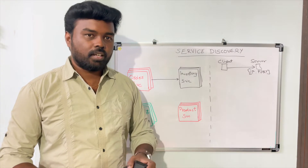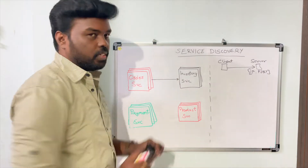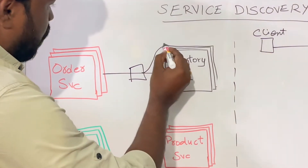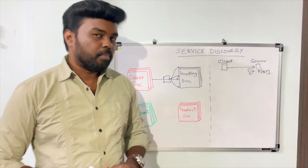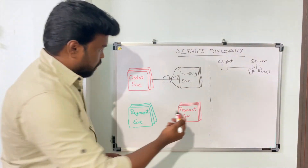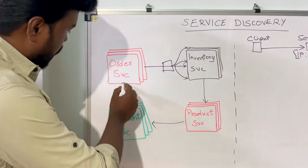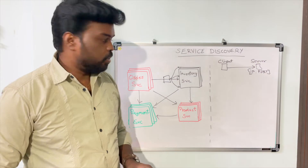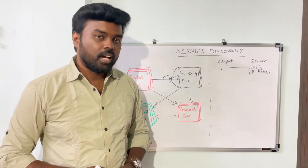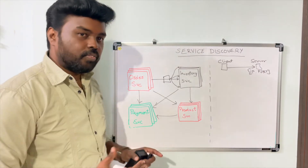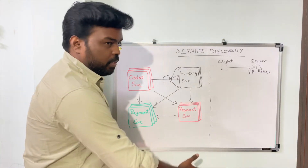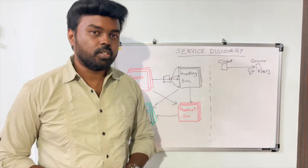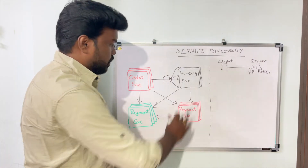One very straightforward approach to solve this problem is to put a load balancer in front of the inventory service. The load balancer will make sure it routes the traffic to all the instances. But the problem is not only the order service talks to the inventory service — the inventory service also talks to the product service, and the product service may talk to the payment service. There is a lot of inter-service communication in microservice design. If you go with the load balancer approach, you will end up with a fleet of load balancers in your infrastructure, which is definitely difficult to manage and scale.